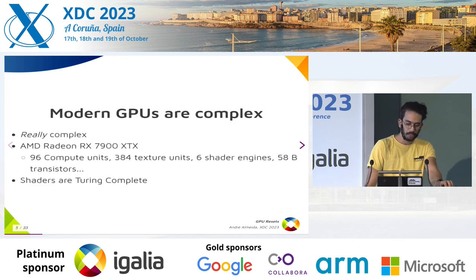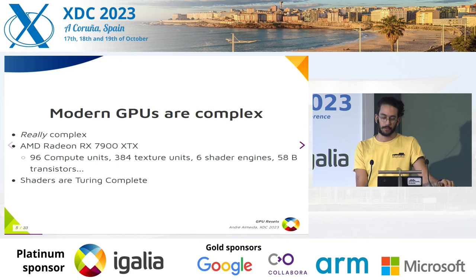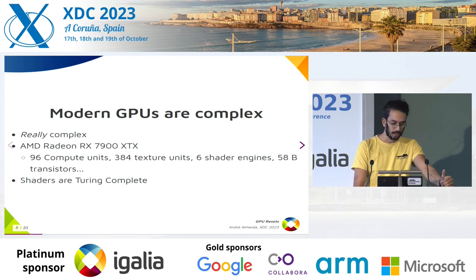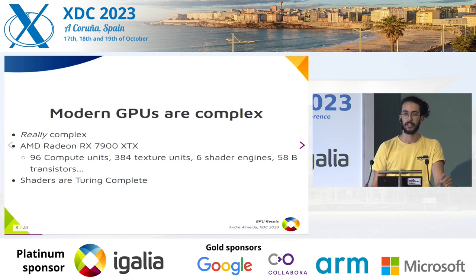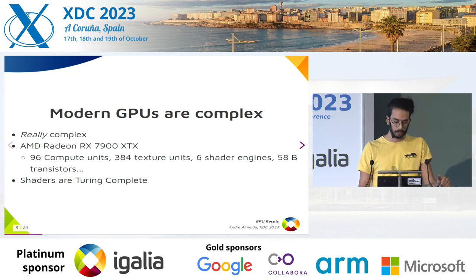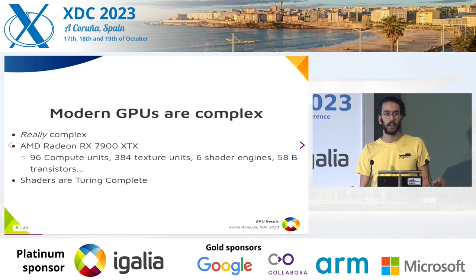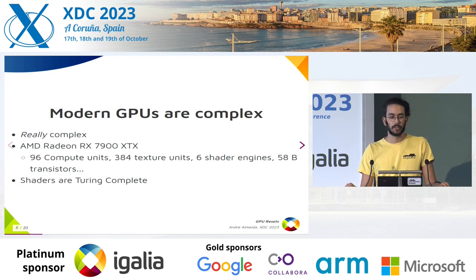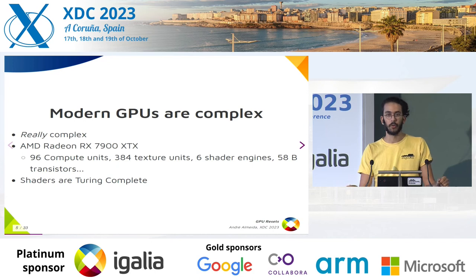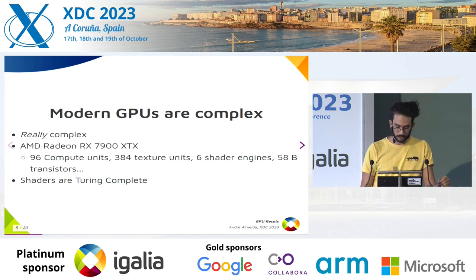That happens because modern GPUs are very, very complex. As Melissa showed yesterday, they have a lot of different features, a lot of different compute units, transistors. And on top of that, shaders are Turing-complete.